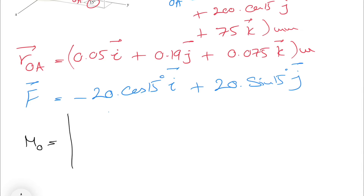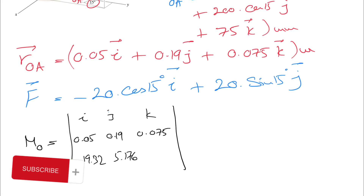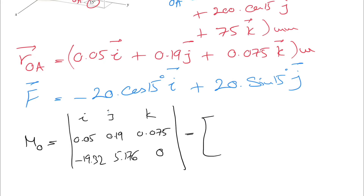Now we can find the moment using the determinant of r and F with i, j, k. The second row contains our r components: 0.05 for i, 0.193 for j, and 0.075 for k. Calculating the F components: minus 20 cosine of 15 gives minus 19.32, and 20 sine of 15 gives 5.176, with no k component.